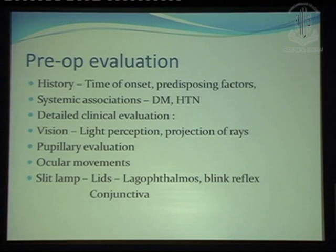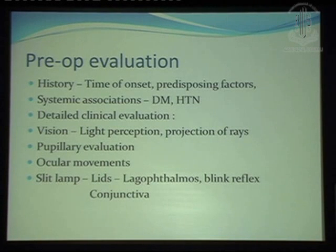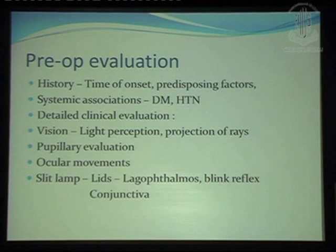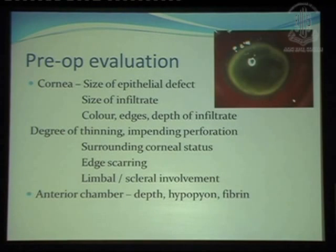Detailed clinical evaluation: visual acuity would be quite poor in all these patients, so look for projection of rays and perception of light. If there is no perception of light, you need to really discuss with the patient the purpose of doing the keratoplasty. Pupillary evaluation — try to look for the relative afferent pupillary defect in the other eye to give some idea of the posterior segment and optic nerve. Ocular movement: if the infection has gone into the sclera causing something like panophthalmitis, that can restrict ocular movement, so that needs to be understood before keratoplasty. At the slit lamp, check for lid infection, lagophthalmos — if lagophthalmos is the primary cause of a corneal problem, you definitely need to do a tarsorrhaphy when you do the therapeutic keratoplasty. Blink reflex and other things also need to be evaluated.